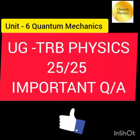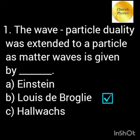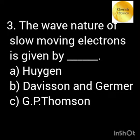Welcome to my channel CherisPhysics. The wave-particle duality was extended to a particle as matter waves. The wave nature of light is given by the wave nature of slow-moving electron is given by.